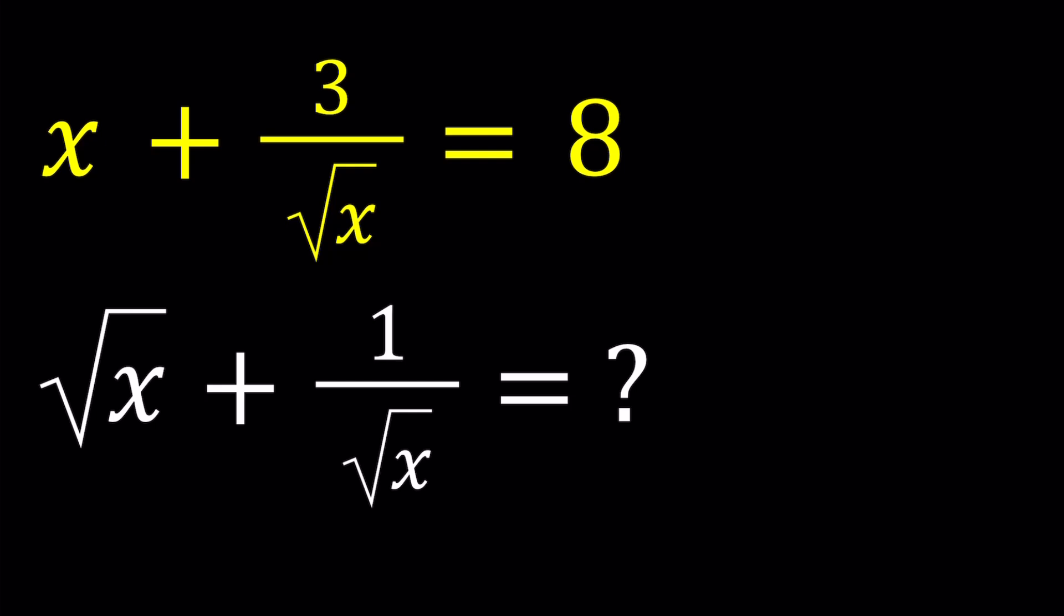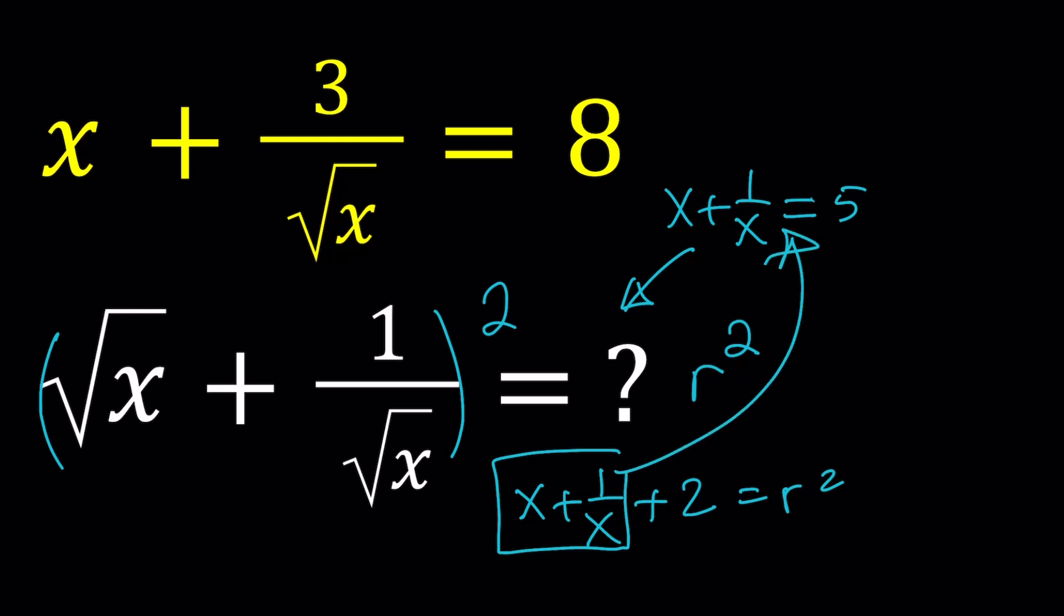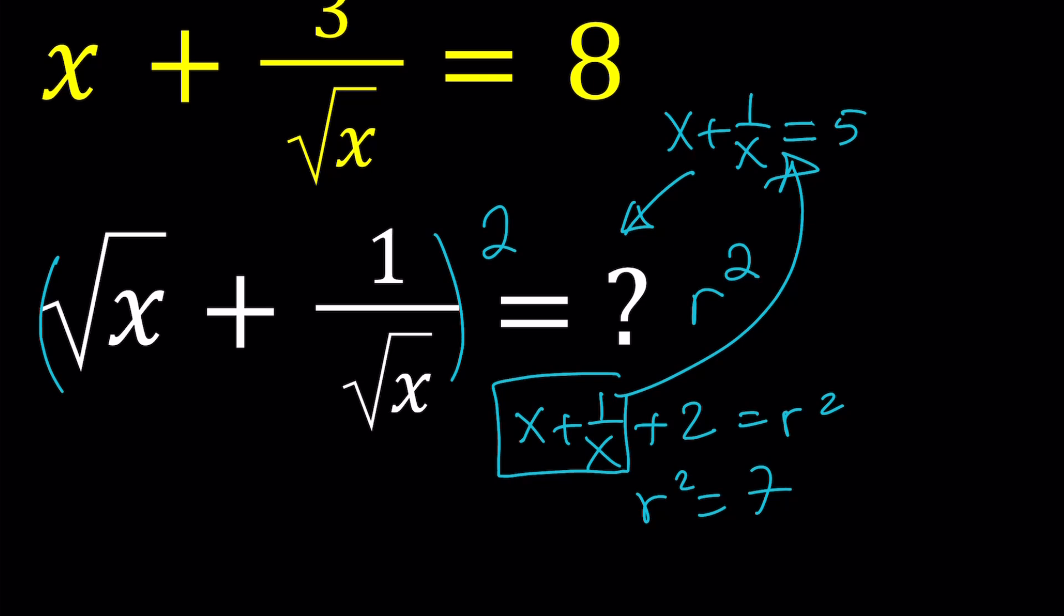Let me give you a different version before we start. Sometimes you're given something like x plus 1 over x equals 5. As long as it's greater or equal to 2, that would be okay for x real. And then they might ask you something like this, and this would be fairly easy, because what you would do is set it equal to r for radical and square both sides. That would give you x plus 1 over x plus 2 equals r squared.